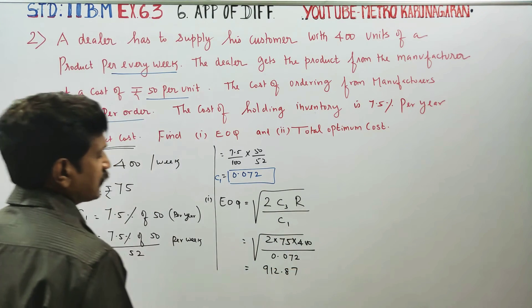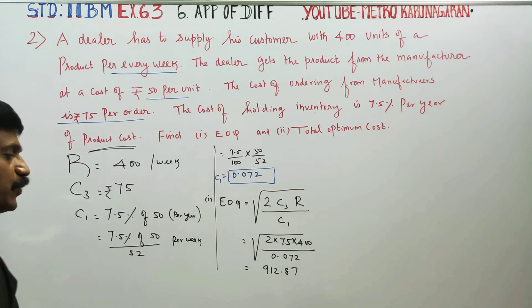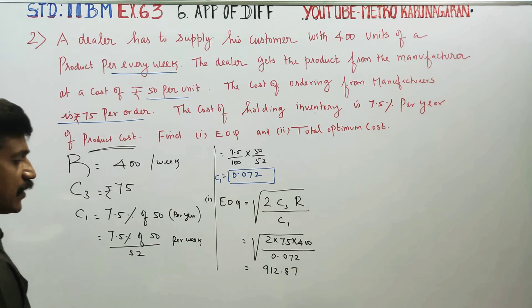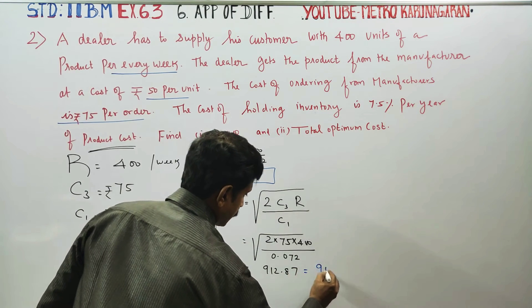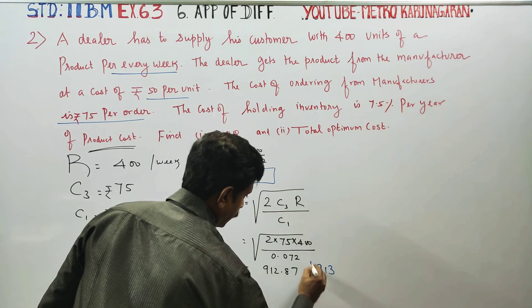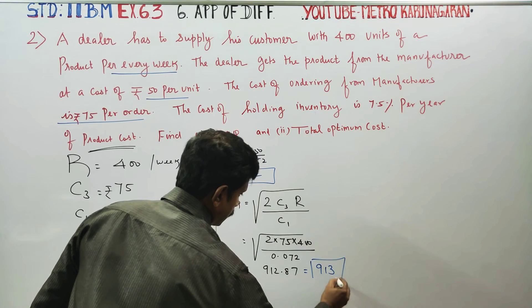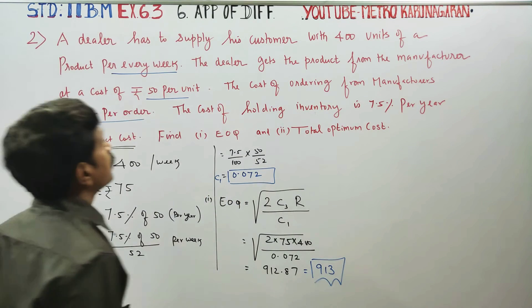EOQ formula: EOQ = √(2 × C3 × R / C1) = √(2 × 75 × 400 / 0.072) = 912.87 ≈ 913 units.